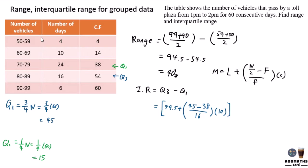Then minus your Q1. Open a bracket. Your Q1 lower boundary is 69.5, plus—now your median is n over 2, but your Q1 is 1 over 4 n, which is 15—so 15 minus the cumulative frequency of the previous class, which is 14, divided by the frequency of your Q1 class, which is 24, times the class.